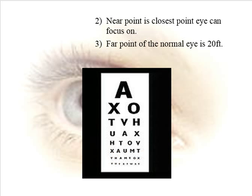The near point of your eye is the closest point that you can focus — we check for your near points in lab. The far point of the eye for an average eye is 20 feet. What that means is if an image is 20 feet away or further, you don't have to do any more light ray bending. For a normal eye, 20 feet away or further, we say the far point is 20 feet.